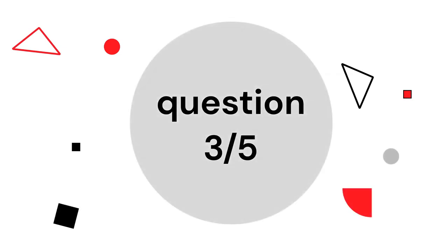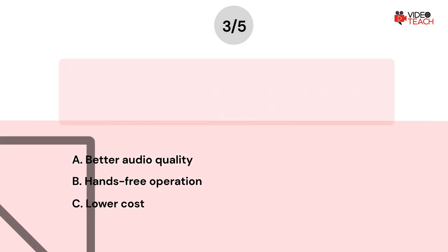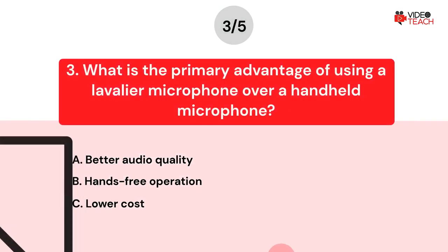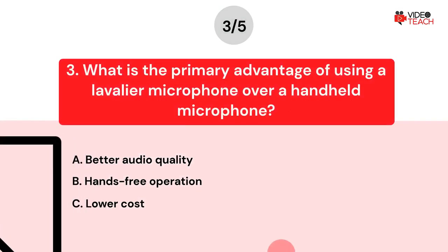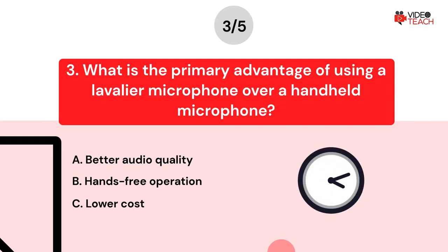Question number three. What is the primary advantage of using a lavalier microphone over a handheld microphone? Option A: Better audio quality. Option B: Hands-free operation. Option C: Lower cost. Now you have about 15 seconds to think about your answer.